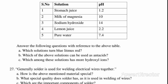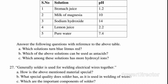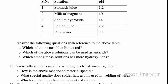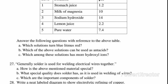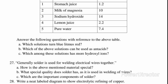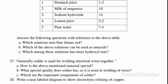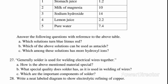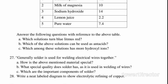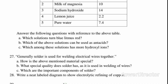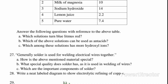Question 27: Solder is used for welding electrical wires together. A. How is the above mentioned material special? Answer: Solder is an alloy. B. What special quality does solder have as it is used in welding of wires? Answer: It has a low melting point. C. Which are the important components of solder? Answer: Lead and tin.